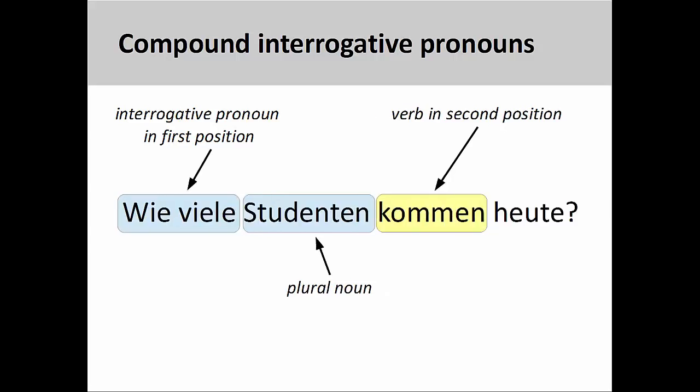The interrogative pronoun wie viele, how many, is usually used in conjunction with a plural noun to ask about the number of that noun. For example, wie viele Studenten kommen heute? How many students are coming today? Again, the verb appears in the second position.